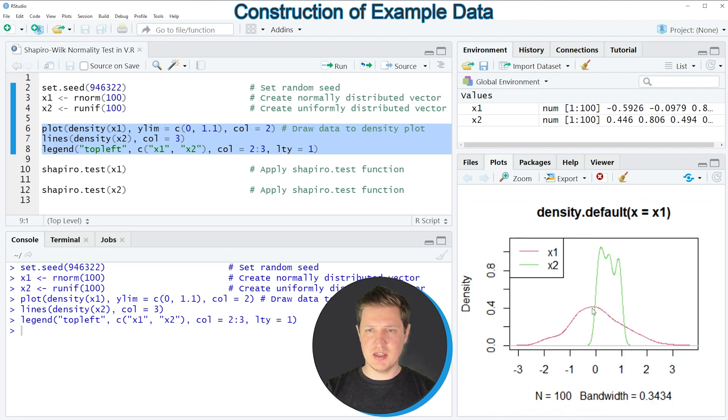As you can see, our first vector object X1 indicated by the red line is following approximately a normal distribution, and the second vector object X2 is not following a normal distribution at all.